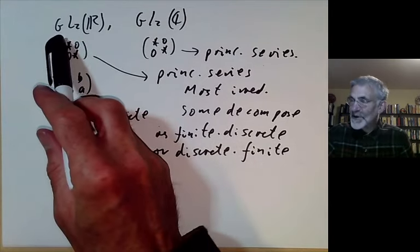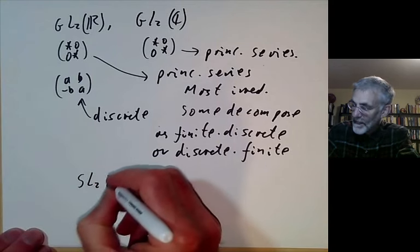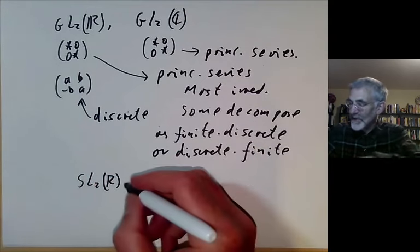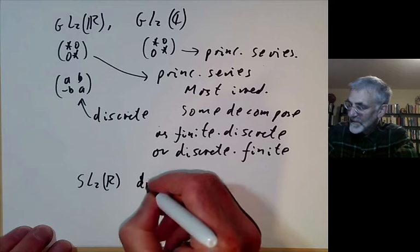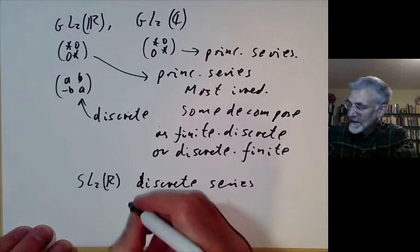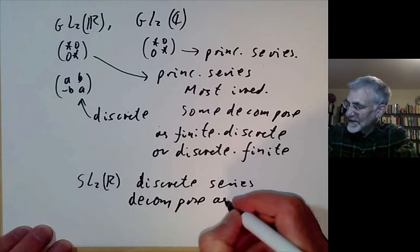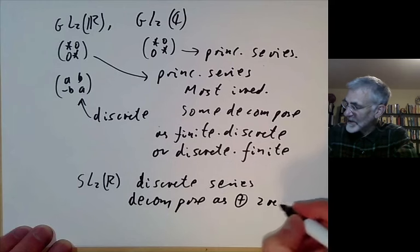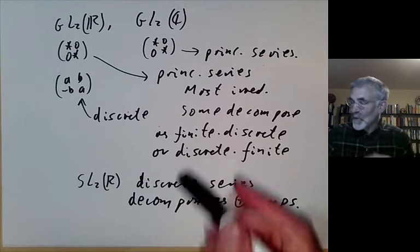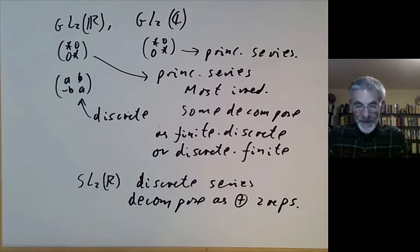Just as for finite fields, if you're looking at SL2(ℝ) some of these representations decompose: discrete series representations decompose as a direct sum of two representations. One can spend many pages of calculation working out exactly which representations decompose and how.